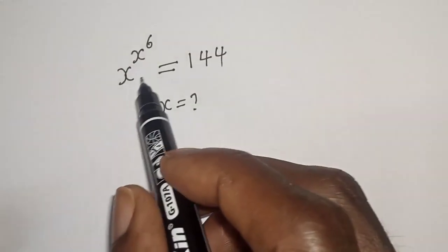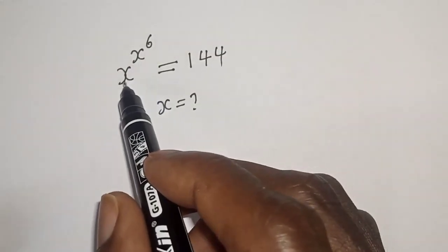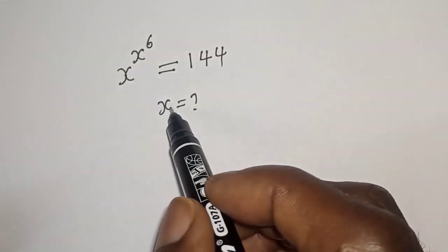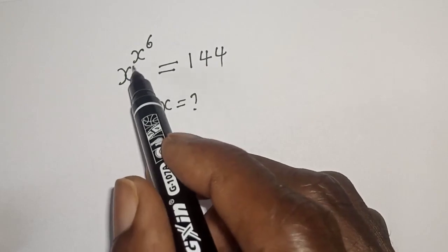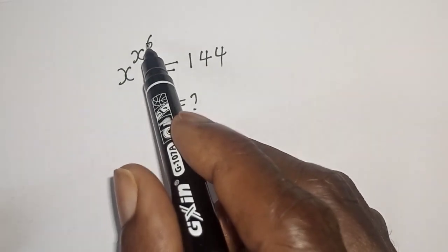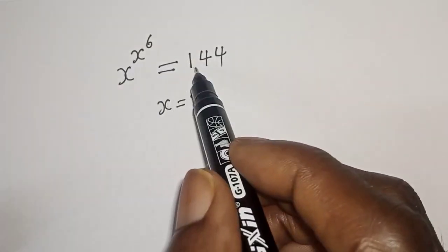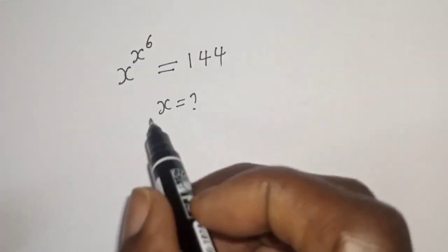Hello, welcome to Mathfocus. How to solve for s in this equation: s raised to the power of s raised to the power 6, is equal to 144.